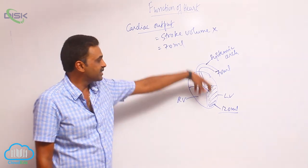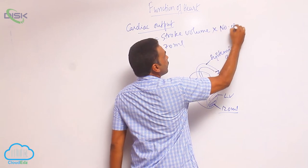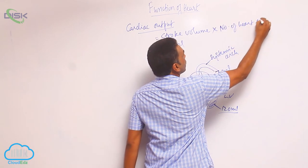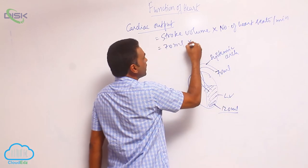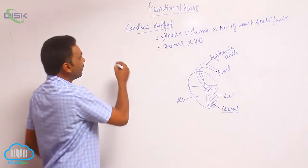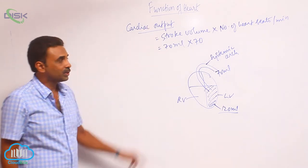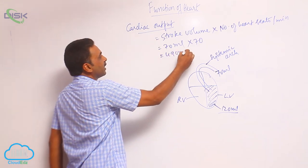It is 70 ml. Number of heartbeats per minute - say 70 heartbeats per minute - that will give you the cardiac output, which is roughly 4900 ml.